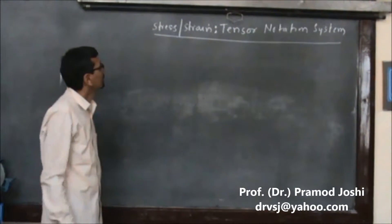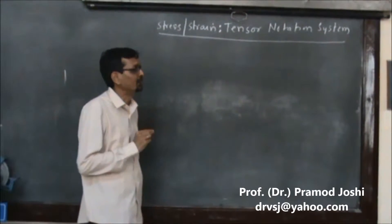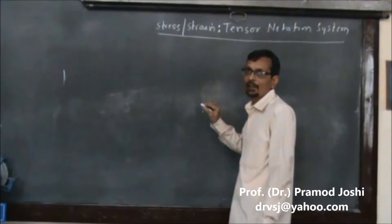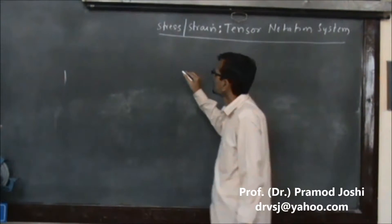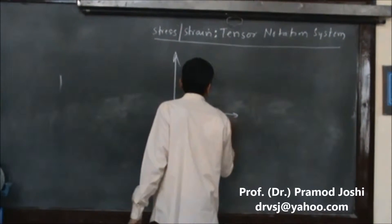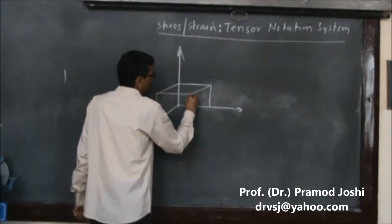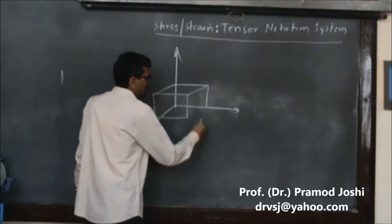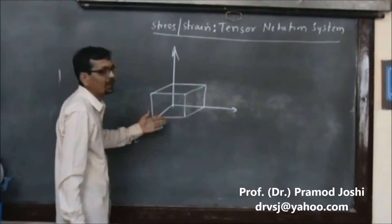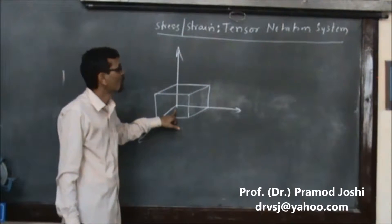Today we will see the tensor notation system for stress and strain. If we take a Cartesian coordinate system, there are three mutually orthogonal planes and this is the origin. So any physical quantity will have to be represented with reference to this Cartesian coordinate system.